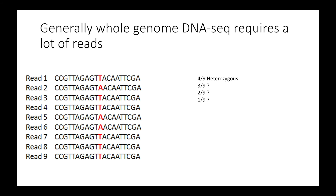But what happens if only three of the nine had an A, or two of the nine, or one of the nine? When do you start saying that's probably more likely an error than a heterozygous position?